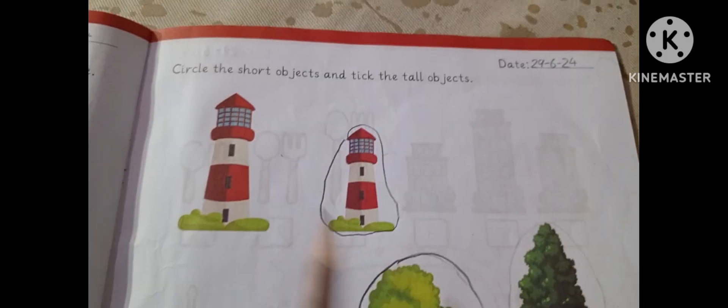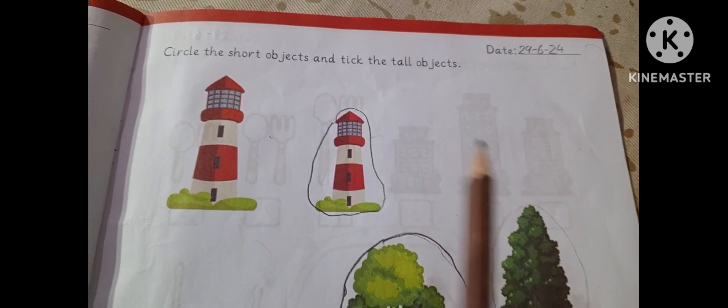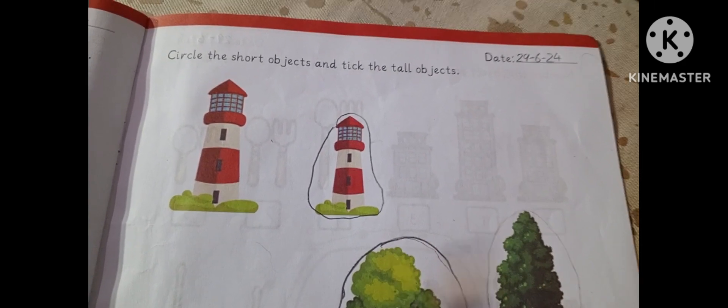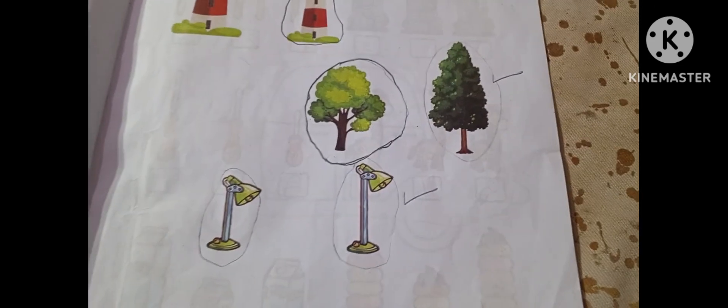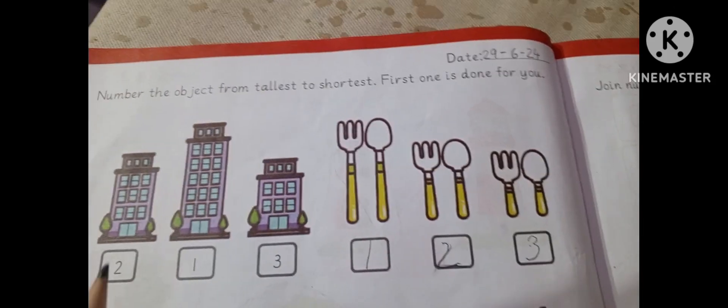Circle the short object and tick the tall object. Sorry this child didn't tick. You have to tick and circle the small object.